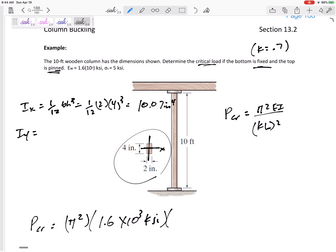But the I Y, you know, this has different I X and I Y. Let me calculate both of them. 1/12th BH cubed. 1/12th times 4 times 2 cubed. This would be 2.67 inches to the 4th.